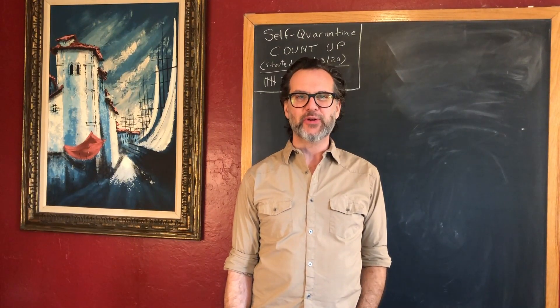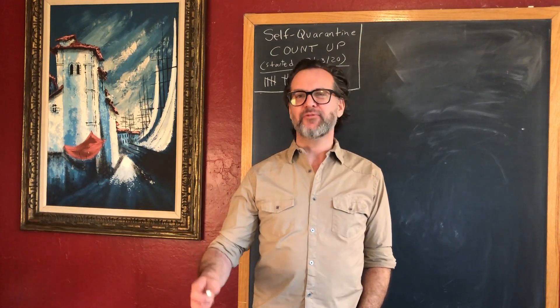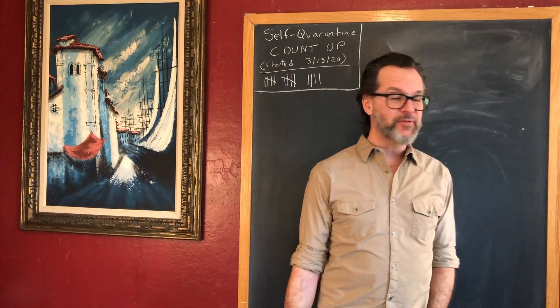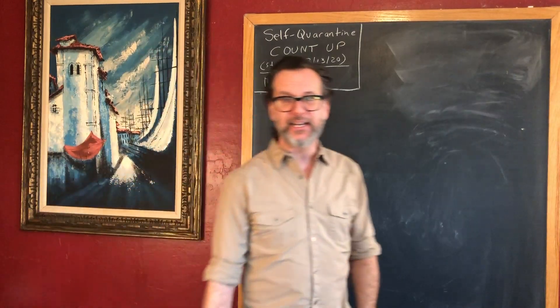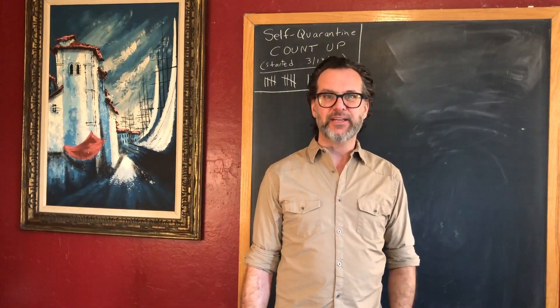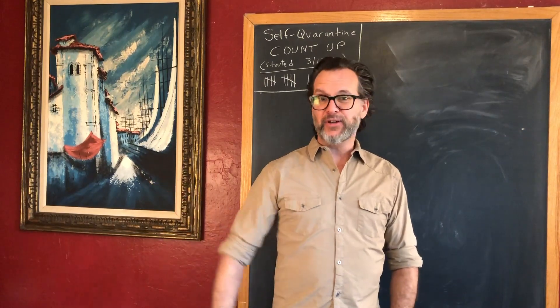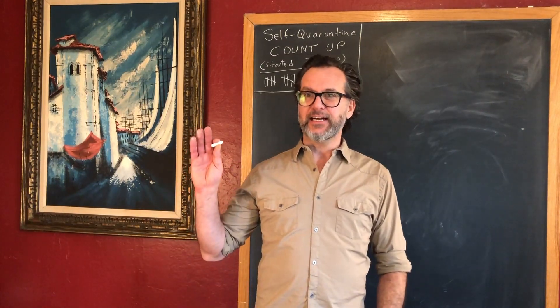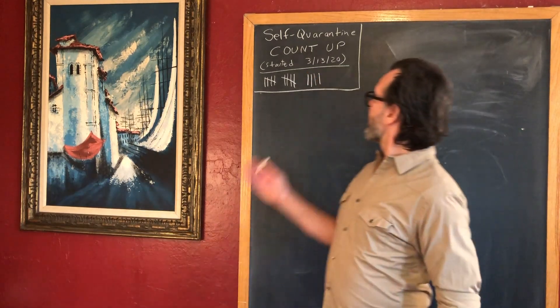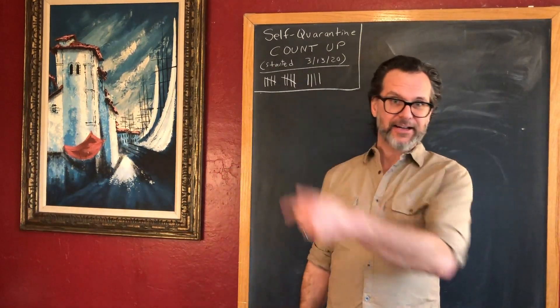All right, everybody. Well, here we go. This is spring term remote instruction classroom number one, political reform. Welcome to the class. I'm here in my dining room. I have a chalkboard actually in my dining room. I have the self-quarantine count-up that I started last week to keep track of how long the family's been locked down. I have left the house — I've been to the grocery store. But the kids haven't been out of the house except for walks in now 14 days. So that's going to stay up there. You're going to see that counting up.